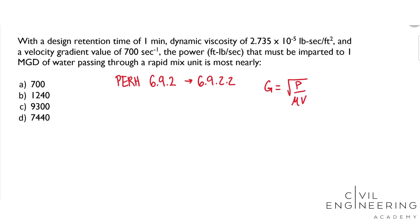So what do all these mean? G is the velocity gradient, P is the power, V is the volume, and mu is the dynamic viscosity.